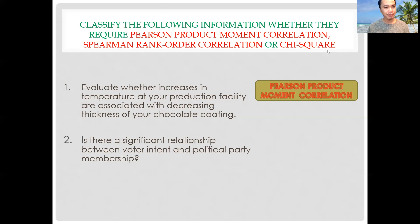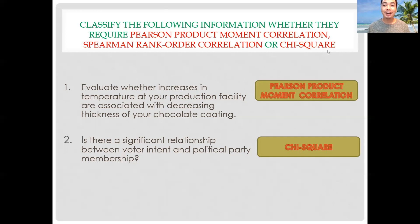Next: is there a significant relationship between voter intent and political party membership? What statistical treatment should we use — Pearson, Spearman, or chi-square? The answer is chi-square, since we will be dealing with a categorical variable — political party — which is classified as nominal-type data.